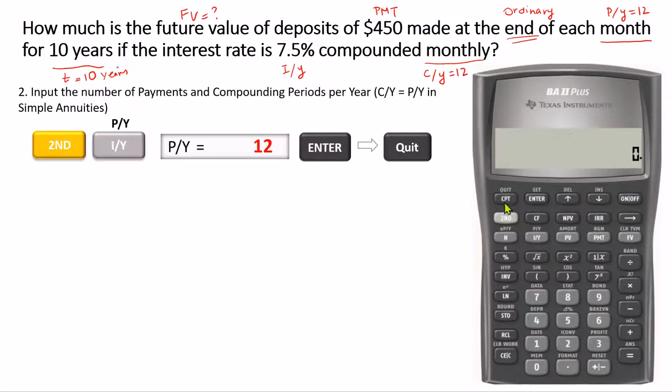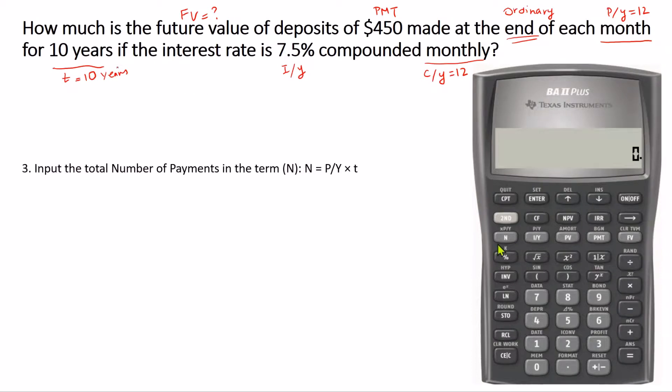Now for the rest of the values, in order to enter, we type in the number first and then we press the corresponding key. N is the total number of payments in the whole term, which is the number of payments per year (P/Y) multiplied by the number of years in the term, which in this case is T and is 10 years. So 12 multiplied by 10 makes it 120 total payments in the investment term. So we type in 120, then press N. And as you can see, this equal sign means 120 is stored in N key.